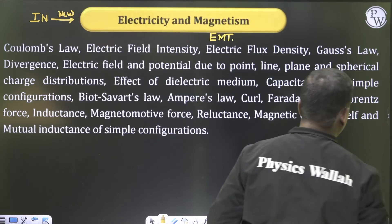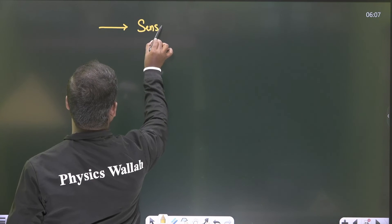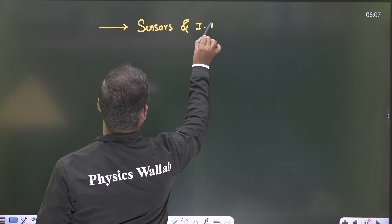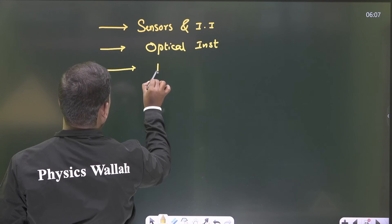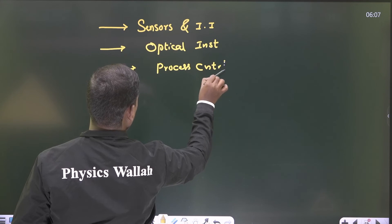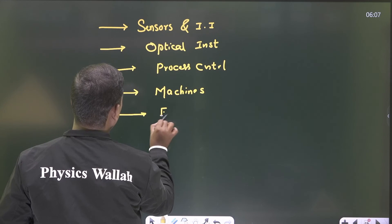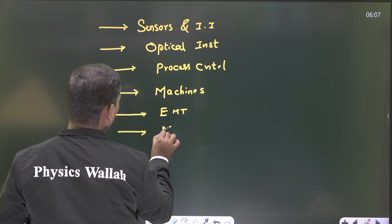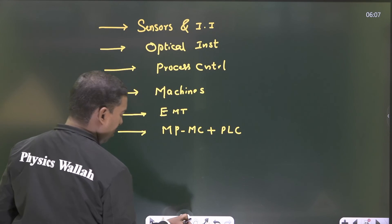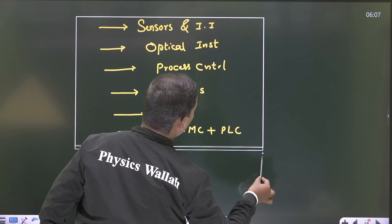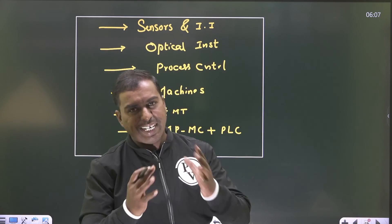Overall, the extra subjects for instrumentation students compared to other departments are: sensors and industrial instrumentation, optical instrumentation, process control instrumentation, machines, electromagnetic theory, and microprocessors/microcontrollers plus PLCs. These are the extra topics differing from electrical and ECE. If electrical and ECE students focus on these subjects, their rank will definitely improve.